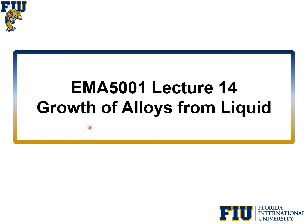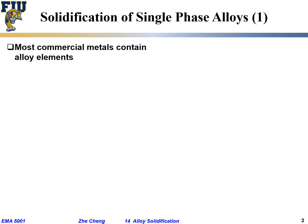How do these things grow from the liquid? That's what we're going to deal with. The reason we do that is commercial metals contain alloy elements. Only in very rare cases do we use pure aluminum — very soft, used for food wrap — pure nickel for very special applications, pure copper for electrical cable. But anything else, we add alloy elements.